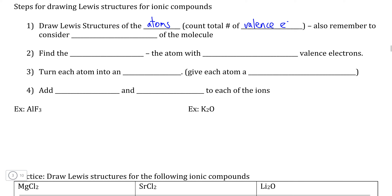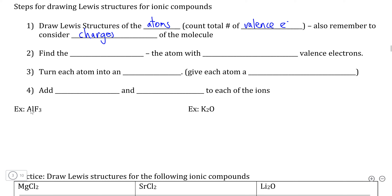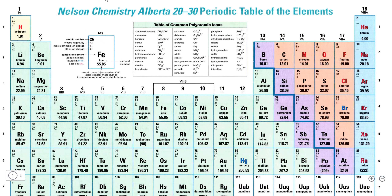In ionic compounds, the purpose of counting the valence electrons is to consider what the charges are going to be for each of the ions that are formed. Going to our periodic table, we're looking for four elements: aluminum, fluorine, potassium, and oxygen. Aluminum is in group 3A, meaning it has three valence electrons. Potassium is in group 1A, so it has one. Fluorine is a halogen in group 7A, so it has seven valence electrons.